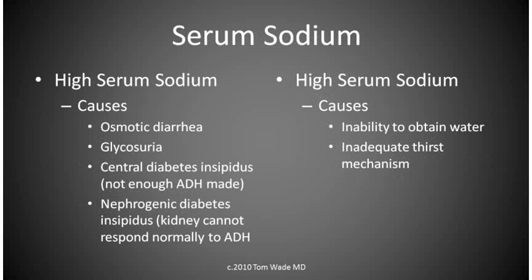The causes of high serum sodium include osmotic diarrhea, which occurs when the intestines are unable to digest foods and the undigested food draws water into the colon, causing diarrhea. High serum sodium can also occur with glycosuria — loss of glucose in the urine, which draws water along with it. This can occur when the blood sugar is very high.